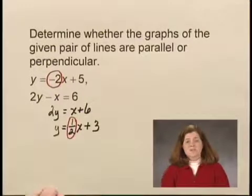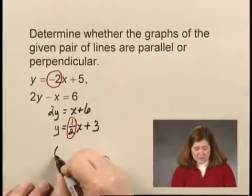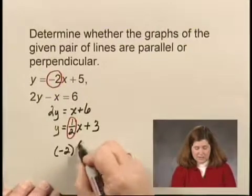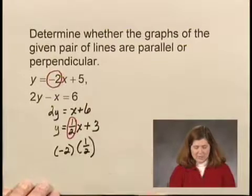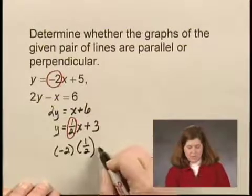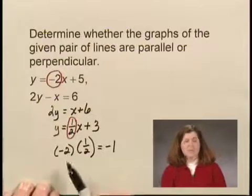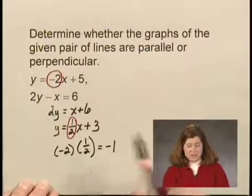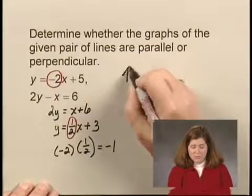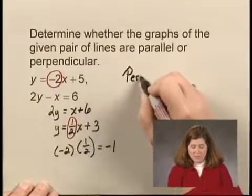Let's determine the product of the slopes. Negative 2 times 1 half is negative 2 over 2, or negative 1. Since the product of the slopes is negative 1, the graphs of the lines are perpendicular.